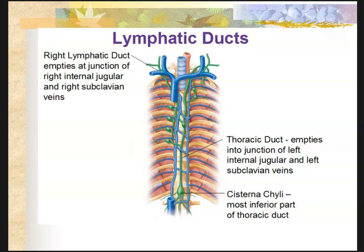I promised to show you where these lymphatic ducts wind up. Down here is that cisterna chyli — it's kind of like a junction of several different lymphatic vessels all coming together, so it looks like a big lymph node. Then the thoracic duct goes right up in front of the spine. Right here at the junction of the subclavian vein and the jugular vein, that is where the lymphatic fluid drains back into systemic circulation. The thoracic duct is on this side, and over here the right lymphatic duct does the same thing, feeding into the junction at the right jugular and right subclavian.